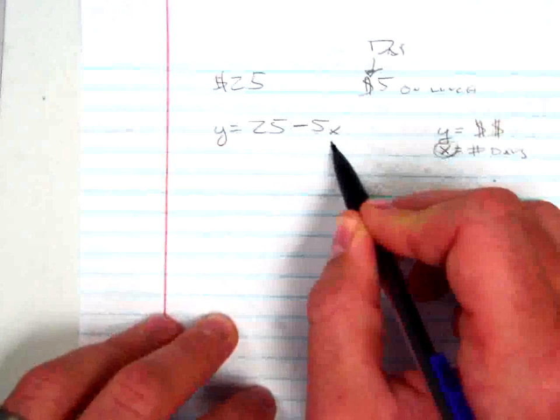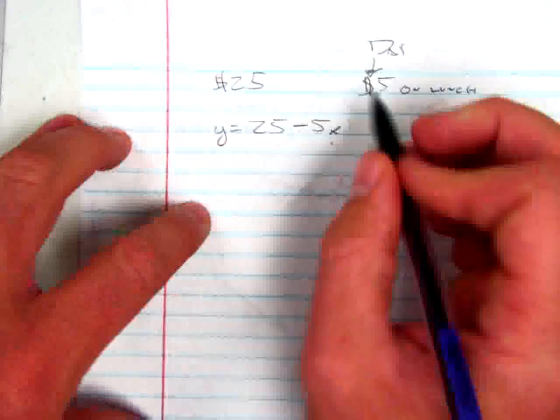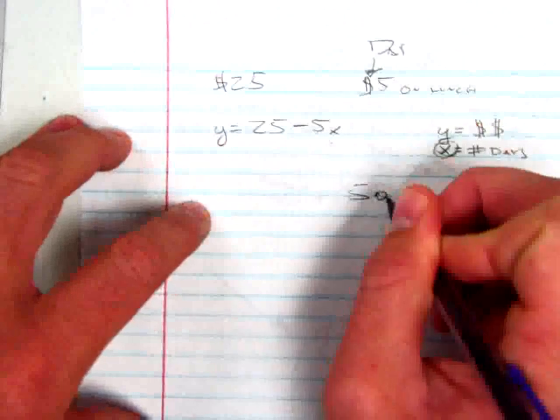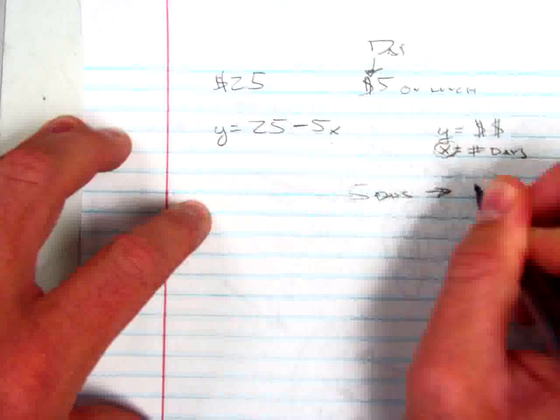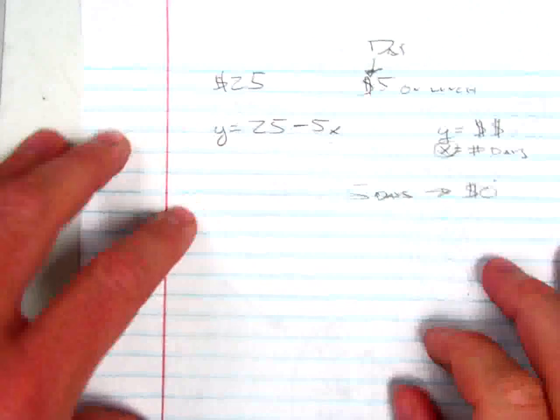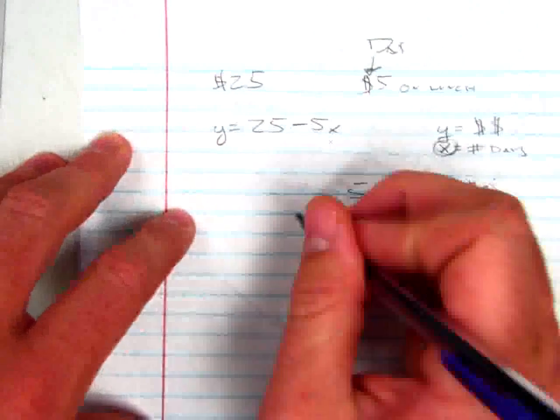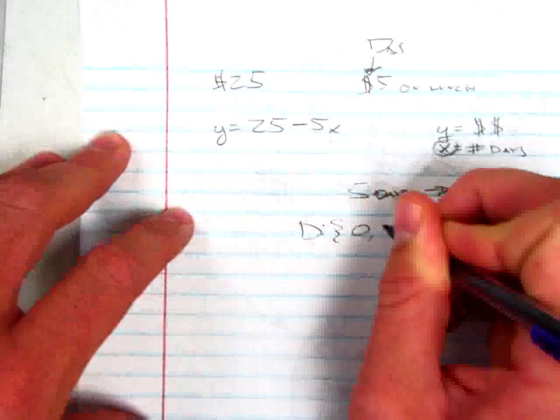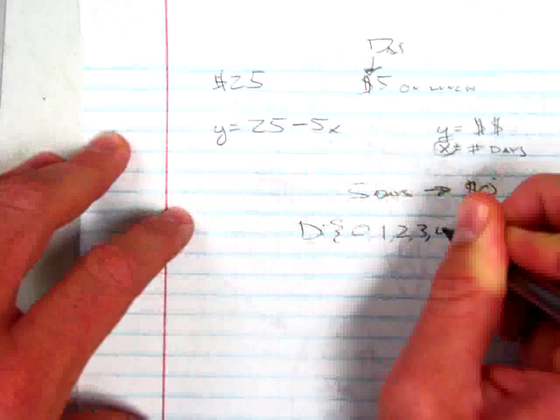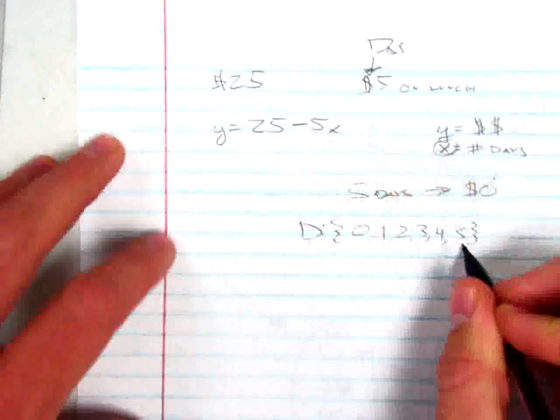Some of you may have already done the math in your head. You know that after 5 days, I have $0. So your domain here is going to be 0, 1, 2, 3, 4, and 5 days.